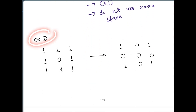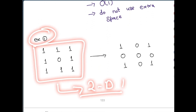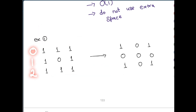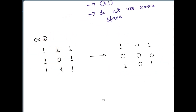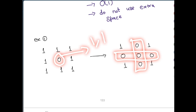Let us understand the problem using examples. The first example is a 3x3 matrix with three rows and three columns. The question says that if you have a zero anywhere in the input — for example, we have a zero at row number 1, column number 1 — then we need to set the entire row and entire column at that index as zero. So entire row 1 is zero, entire column 1 is zero, and that's the final output.